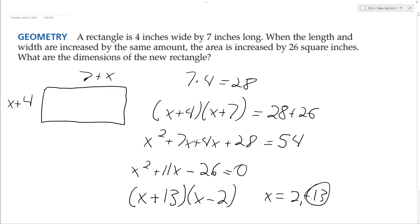Negative 13 is extraneous since dimensions must be positive. Using X equals 2: 7 plus 2 is 9 inches, and 4 plus 2 is 6 inches. So the new dimensions are 9 inches by 6 inches, giving an area of 54 square inches, which is 26 more than the original 28.